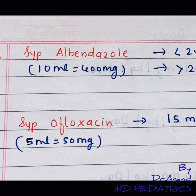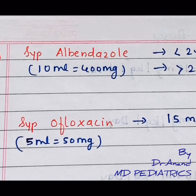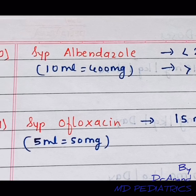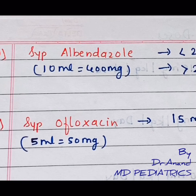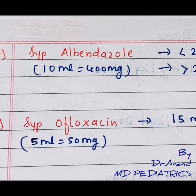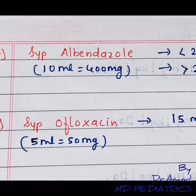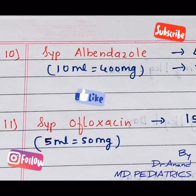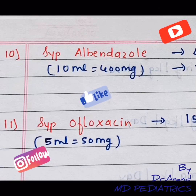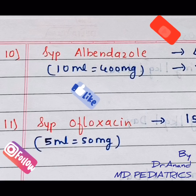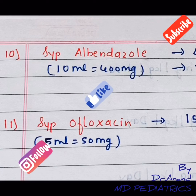That's all about ofloxacin and albendazole. The ofloxacin syrup is 5ml equal to 50mg, and the tablet comes in 200mg and 400mg strengths. Thank you for watching — any comments, anything you want to add, or any more drugs you want covered, you guys can ask me. Thank you.